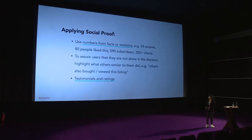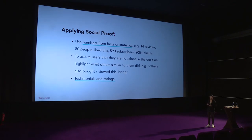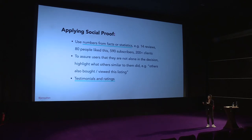To apply social proof, use numbers from facts or statistics — 14 reviews, 100 people liked it, 1,000 subscribers, 200-plus clients. These numbers add up to build authority and assure users they are not alone in their decision. Tell users that others like them also bought or viewed this. Definitely use testimonials and ratings for social proof.